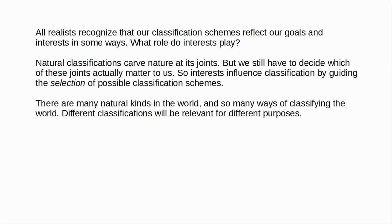So interests play a role in guiding the selection of classification schemes. For example, for the purposes of analysing an ecosystem or the evolutionary dynamics of populations in a particular ecosystem, you probably won't need to track the natural kinds we track in chemistry — you're probably not going to need to apply the periodic table. And there may be some natural kinds that we just haven't uncovered because it's not necessary for any particular purpose so far.